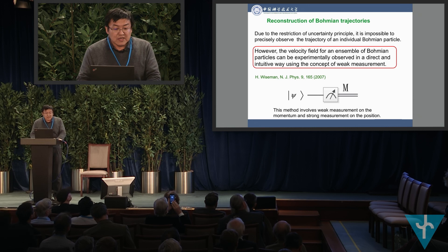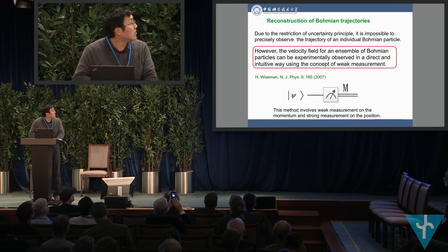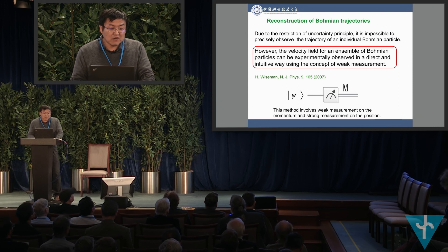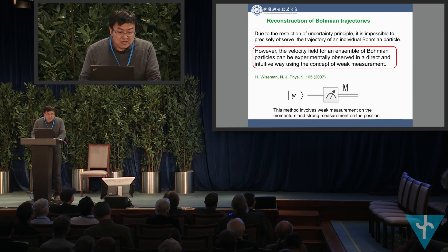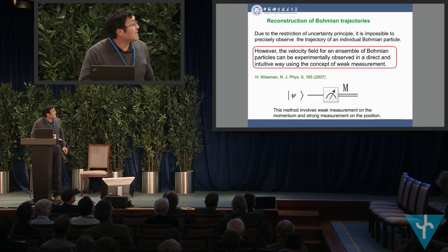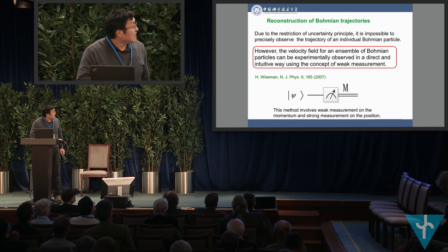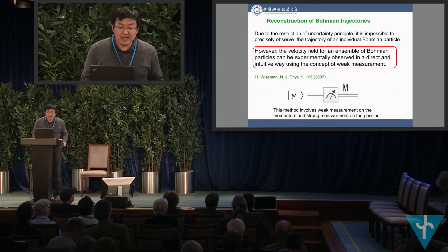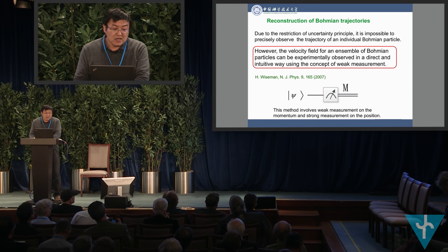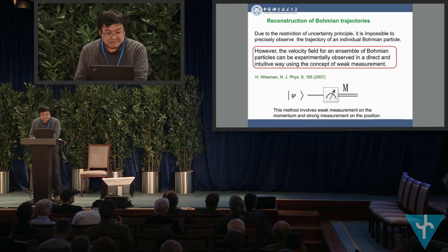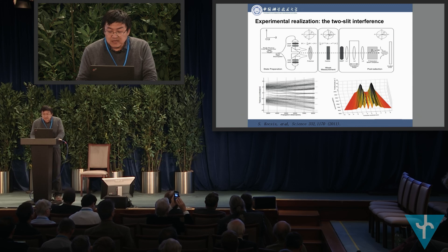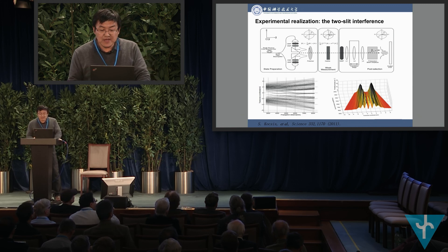Due to the restriction of the uncertainty principle, it is impossible to precisely observe the trajectory of an individual Bohmian particle. However, according to the work of Howard Weisman in 2007, the velocity field for an ensemble of Bohmian particles can be experimentally observed in a direct and intuitive way using the concept of weak measurement. This method involves weak measurement on the momentum and strong measurement on the position. Then in 2011, the average trajectories of single photons in a two-slit interference were demonstrated.